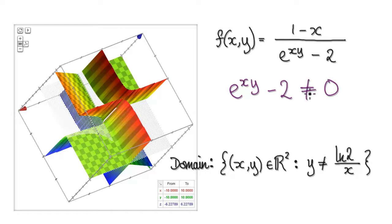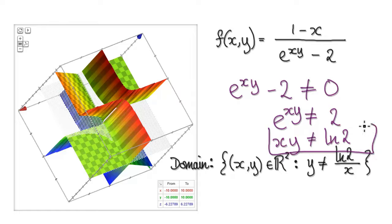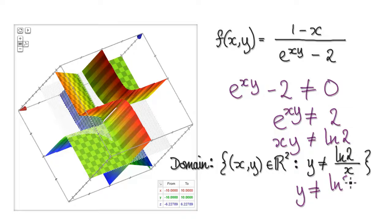What does this mean? Let's add 2 to both sides. So it means that e to the power of xy cannot equal 2. What does that mean? Let's take the natural log of both sides — that gives us xy cannot equal ln(2).